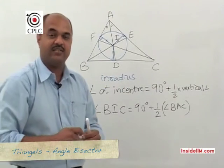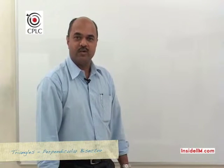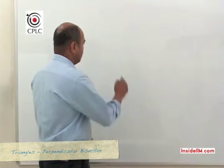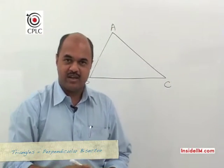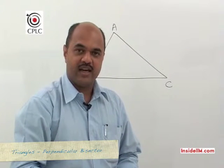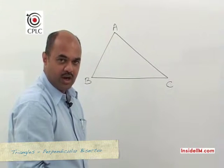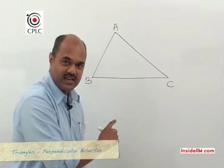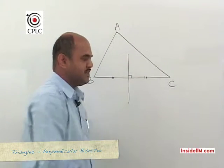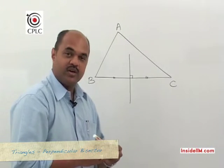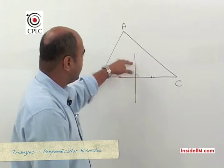Finally, let's look at the perpendicular bisector. Starting with triangle ABC, a perpendicular bisector is a line which is perpendicular to a side and also bisects it. For side BC, we draw a line perpendicular to BC that also divides BC into two equal parts. An important distinction: unlike the median, altitude, and angle bisector, the perpendicular bisector may not pass through the opposite vertex.